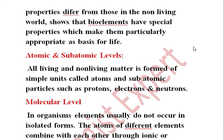Now we'll discuss the levels of organization. The first level is the atomic and subatomic level. All living and non-living matter is formed from the simplest unit called an atom. An atom is made up of subatomic particles like protons, electrons, neutrons, and neutrinos. Quarks are also subatomic particles — these are all parts of the atom.